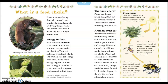Look at the diagram on the right to see how a food chain works. Green plants trap the sun's energy and use it to make food. They use some of the energy and store the rest. When an animal such as an insect eats a plant, it gets the energy that was stored in the plant, though the insect does not get as much of the sun's energy as the plant received. When a frog eats an insect, energy is passed to the frog through the insect, and the frog gets less of the sun's energy than the amount the insect received.